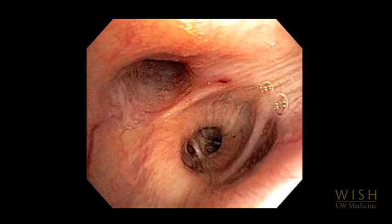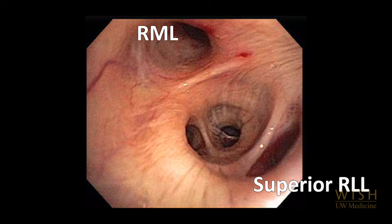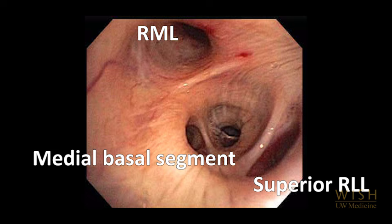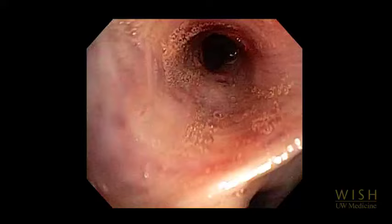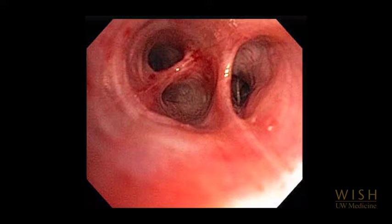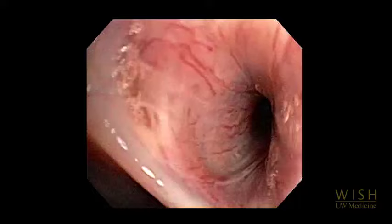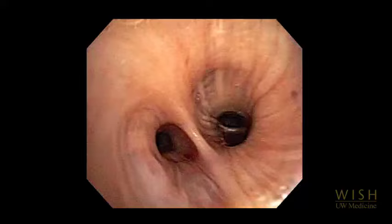The right middle lobe takes off anteromedially. The superior segment of the right lower lobe takes off posteriorly, at the level of the right middle lobe bronchus. The medial basal segment takes off medially. The right lower lobe bronchus continues distally. The right middle lobe has two segments: medial and lateral. We then inspect the superior segment, and then the medial basal segment.